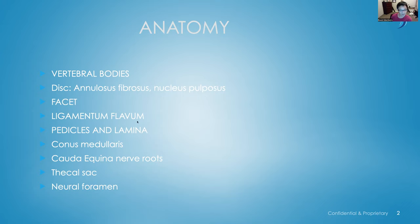Then you have the ligamentum flavum, which makes up part of the spinal canal and functions as ligaments do elsewhere — it helps with the posture of the spine. Then you have pedicles and lamina, which form the bony part of the spinal canal. The conus medullaris is the tip of the spinal cord. As it tapers down, it usually ends at the thoracolumbar junction. It then becomes the cauda equina nerve roots — cauda equina means 'the horse's tail,' because all the nerve roots look like a horse's tail going down the rest of the canal.